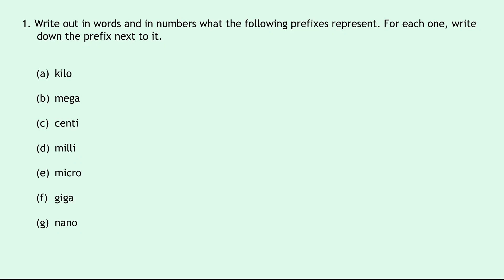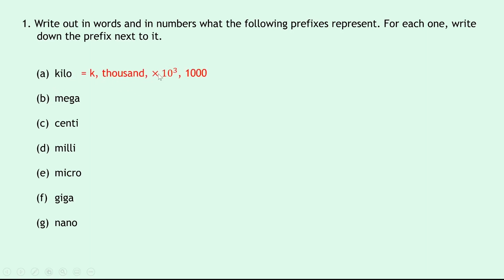Question one is all about prefixes and it says to write out in words and in numbers what the following prefixes represent. For part a, remember from the table of prefixes that kilo has a symbol k — it means times a thousand, or times ten to the three, and written in full that would be 1000. Part b is mega, which has the symbol capital M, meaning times a million or times ten to the six, which is 1,000,000.